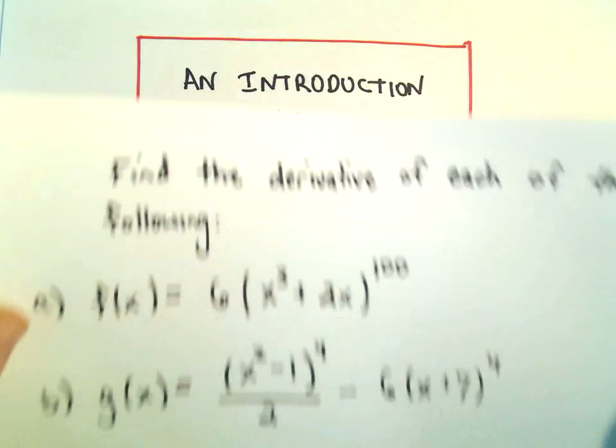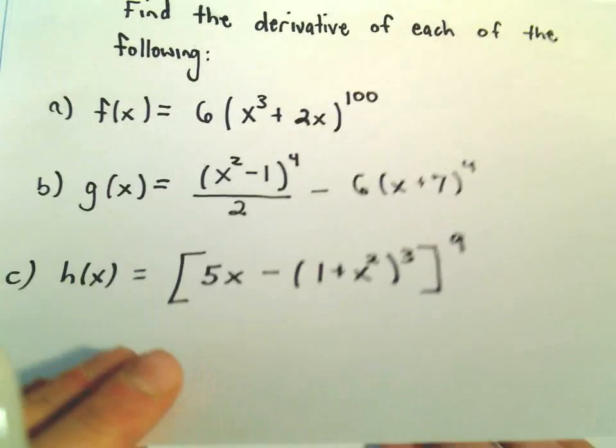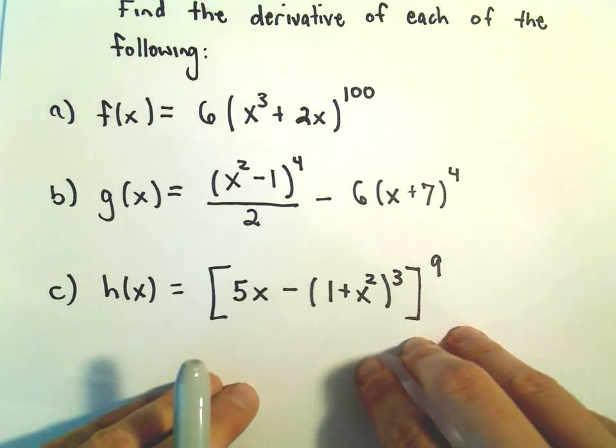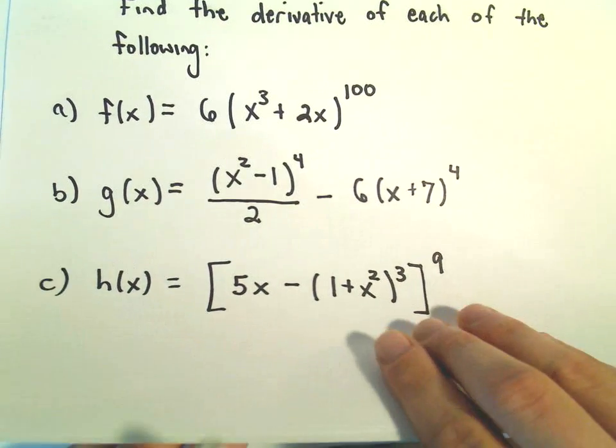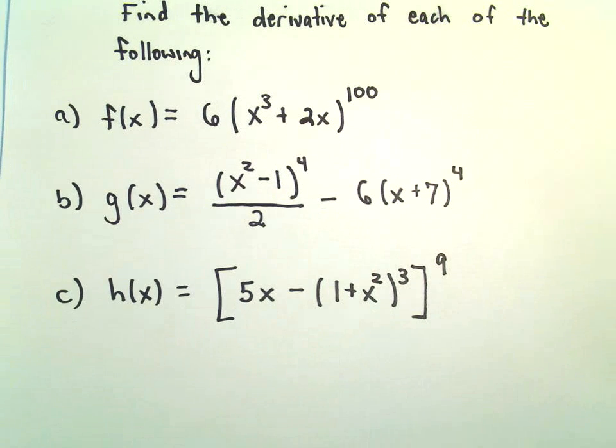Let's look at a few different examples here. We've got f of x equals 6 times x cubed plus 2x raised to the 100 power. Let's take the derivative of that one first.